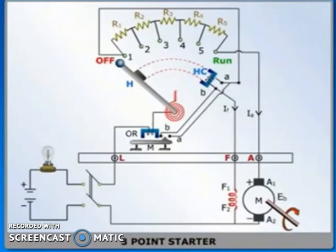This current can be limited to a safe value either by applying a very small voltage to the armature or by adding an external resistance in the armature circuit. Construction-wise, this starter is a variable resistance.